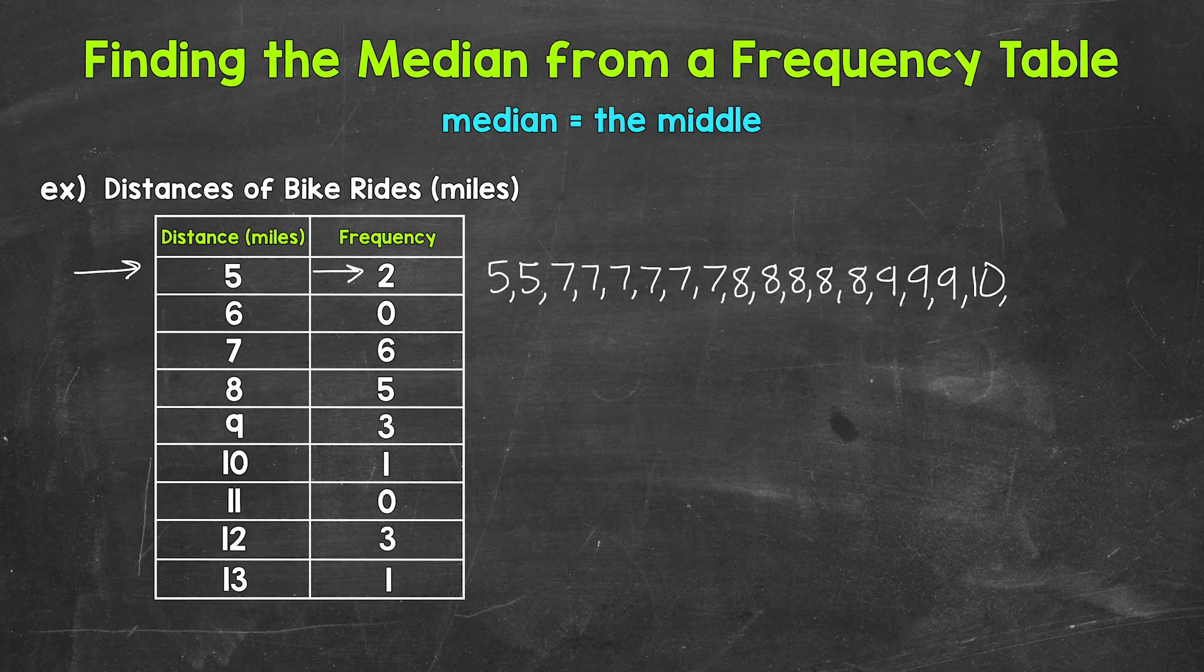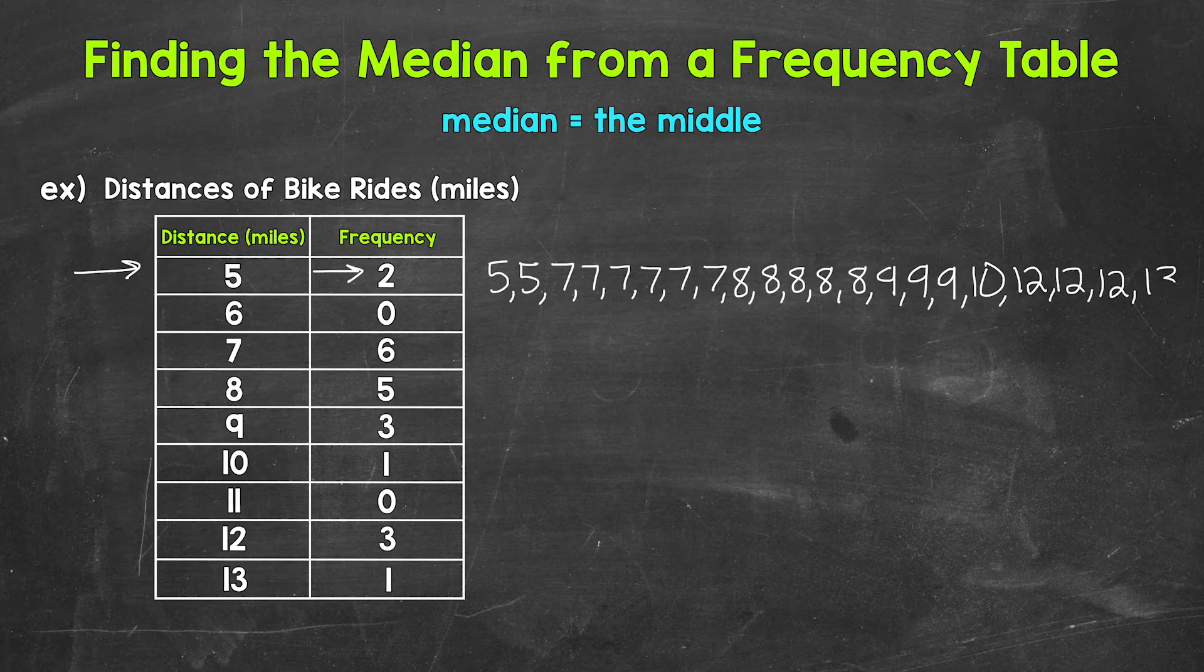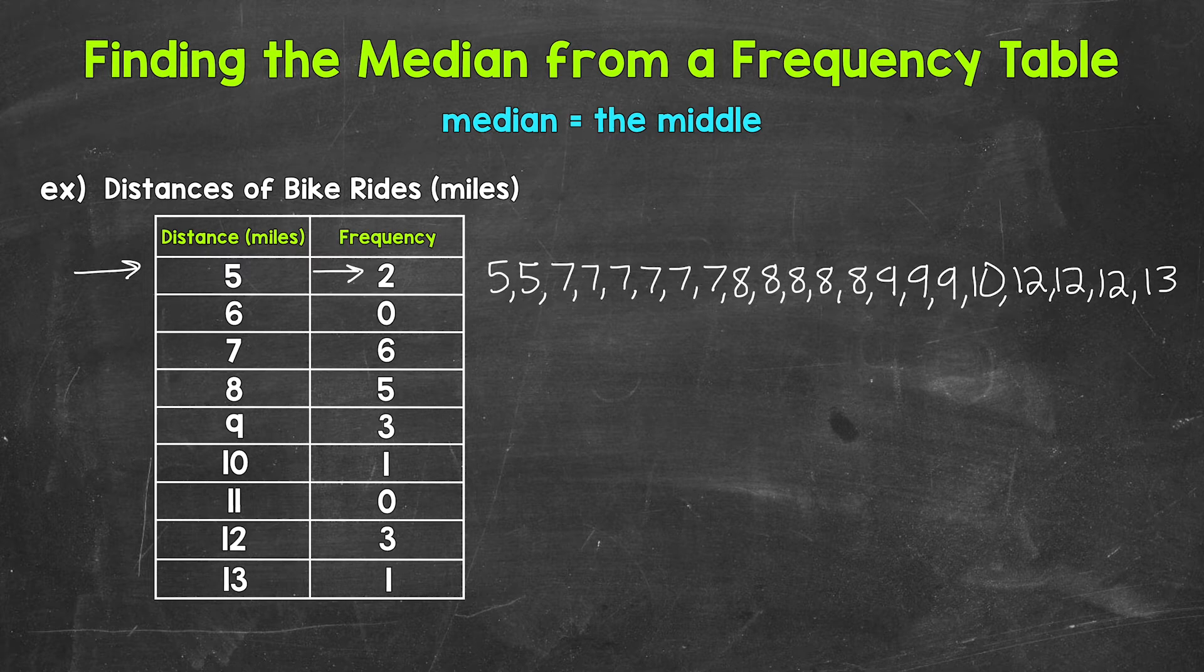Then we have 1 10. We don't have any 11s. And then we have 3 12s. And then we end with 1 13. So that's our list of values in order from least to greatest. So now we need to find the middle.